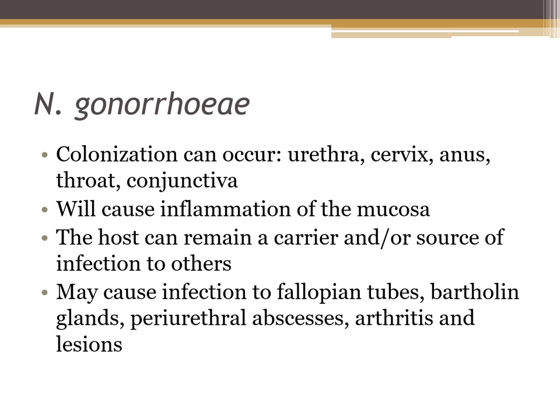Neisseria gonorrhoeae is a pathogen that can colonize the urethra, cervix, anus, throat, and conjunctiva. It can colonize a mother's vagina or cervix and be passed to the baby during birth, potentially causing neonatal blindness. It causes inflammation of the mucosa, and the host can remain a carrier. This may lead to infections of the fallopian tubes, the Bartholin glands, periurethral abscesses, arthritis, and lesions.